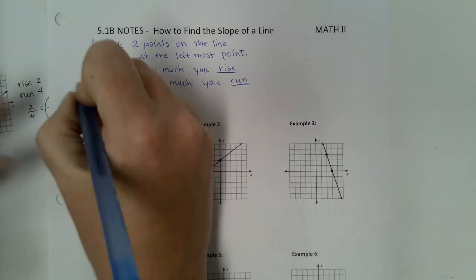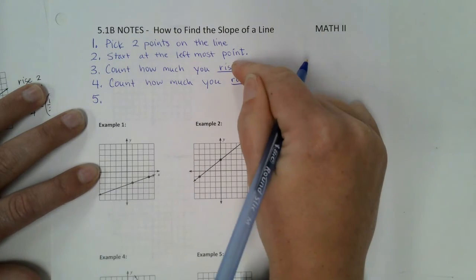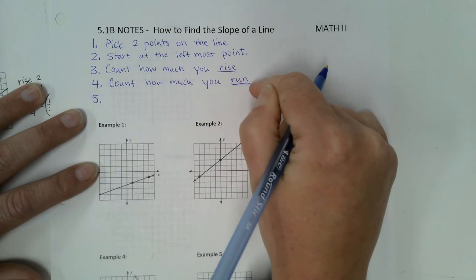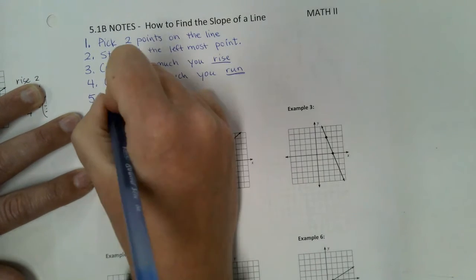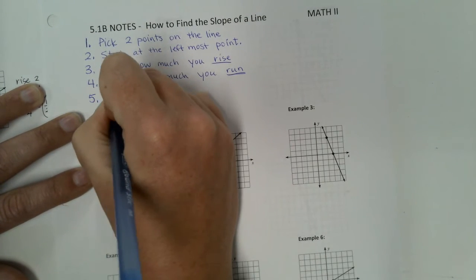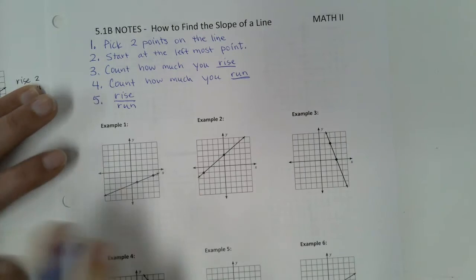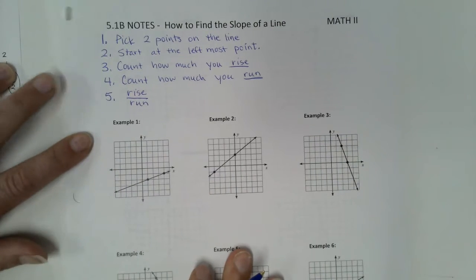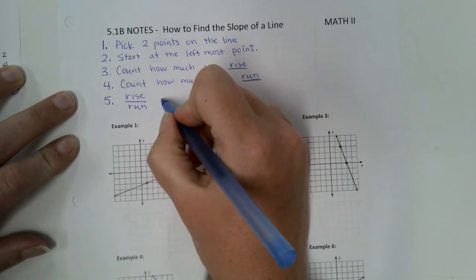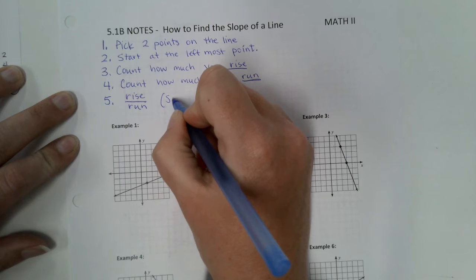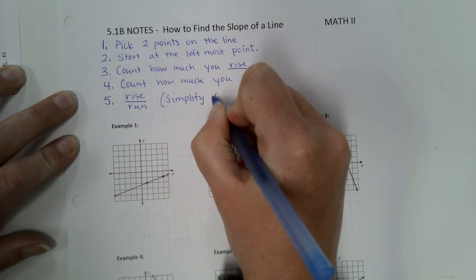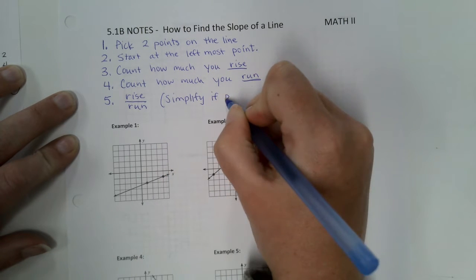Step five: you are going to take these two things — how much you rise and how much you run — and you're going to put them as a fraction. You're going to put your rise over your run. And then part of this step is we're going to simplify if possible. Sometimes it's possible, sometimes it's not, and I will show you how to do that.